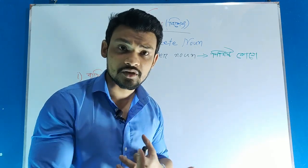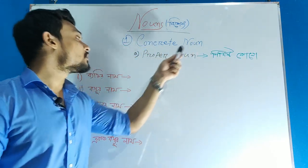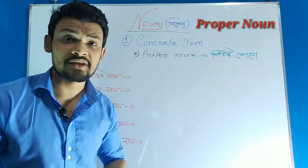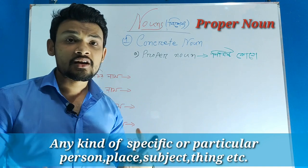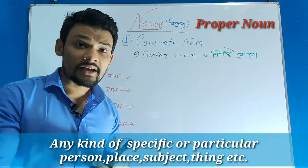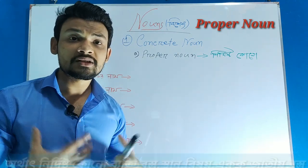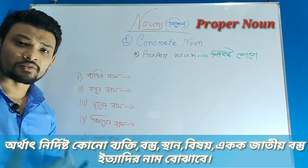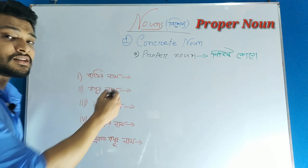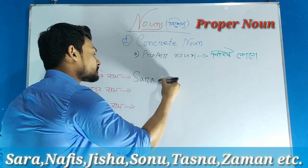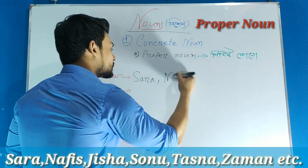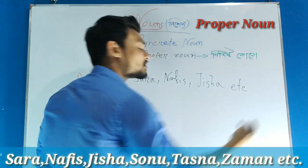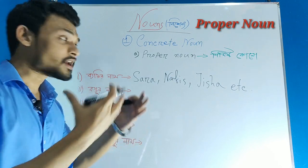Under concrete nouns, the first noun is proper noun. Proper noun refers to names that are specifically designated — names of specific persons, places, or things that are uniquely identified.